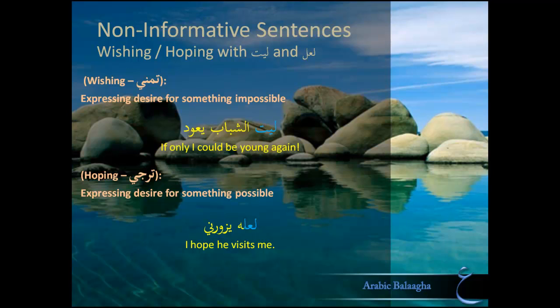Another expression of desire in Arabic is called Tarajji. Tarajji is where you express desire for something that is either unlikely or likely, but not impossible. In English, we refer to this more commonly not as wishing, but as hoping. The most common word for this in Arabic is La'alla. For example, 'La'allahu yazuruni' — 'I hope he visits me.' Notice that someone visiting you is well within reason; it's not impossible. The word La'alla can actually be used for both Tamanni and Tarajji, so now we have two words we can use for Tamanni.